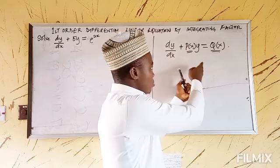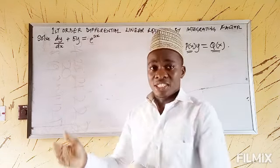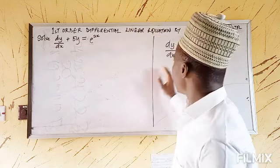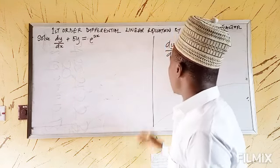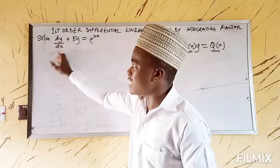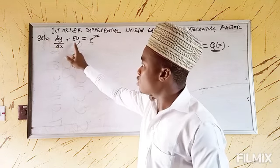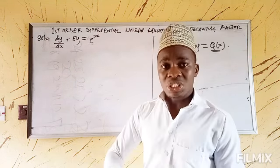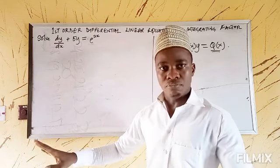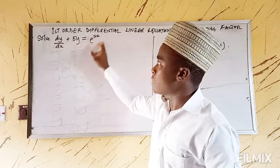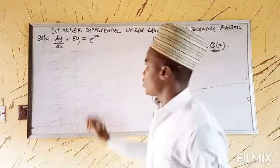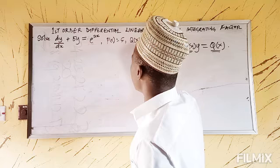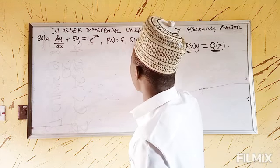So now I want us to look at this equation and compare it to the general form. You can see that the coefficient of dy/dx is unity — it's one. And the coefficient of y is 5, just an ordinary constant. I told you, it's either a function of x or a constant. And look at this — this is my Q(x), which is an ordinary function of x. So here I can have P(x) equal to 5, and Q(x) equal to e to the power 2x.